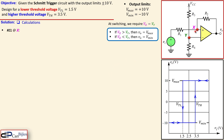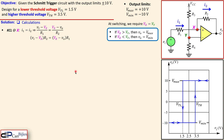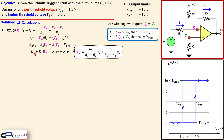We can now set up an equation at node X. Since no current flows into the op-amp input (ideal op-amp), currents I1 and I2 are equal: I1 = (VI − VX) / R1 = I2. Cross-multiplying gives an expression that we work out to combine all VX terms, yielding a key formula for VX in terms of the resistors, the input voltage, and the output voltage. This expression will be used to determine R1 and R2.